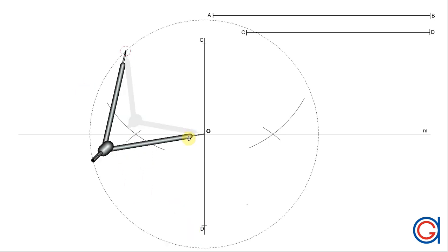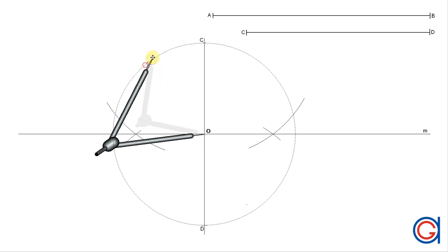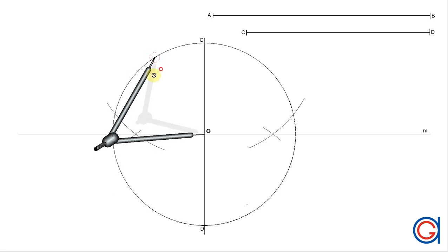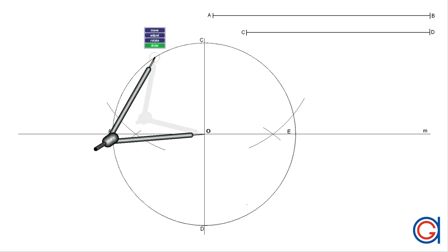The next step, we are going to draw a circle centered on the point O and with radius OC. This circle cuts the horizontal line m at two points, A and E, as shown here in the video.